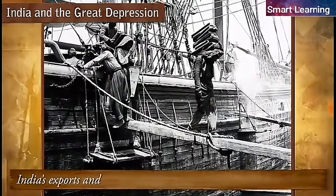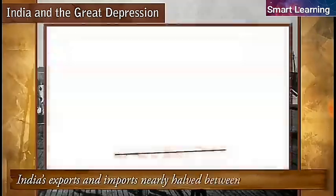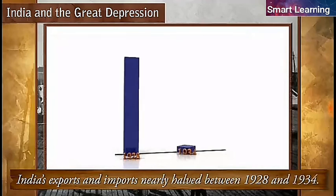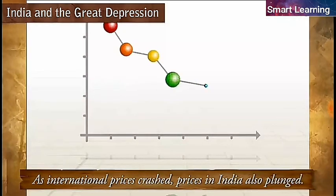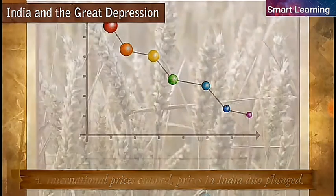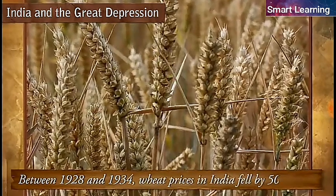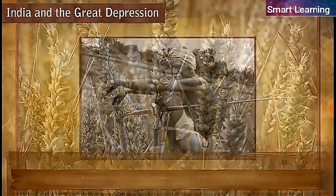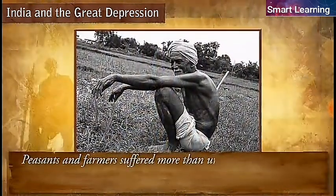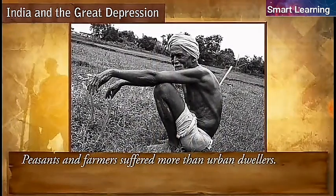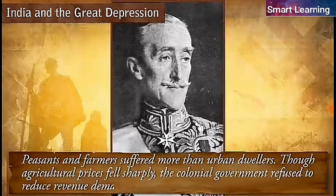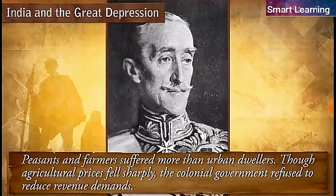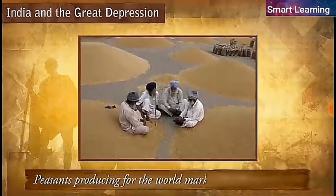India's exports and imports nearly halved between 1928 and 1934. As international prices crashed, prices in India also plunged. Between 1928 and 1934, wheat prices in India fell by 50 percent. Peasants and farmers suffered more than urban dwellers. Though agricultural prices fell sharply, the colonial government refused to reduce revenue demands. Peasants producing for the world market were the worst hit.